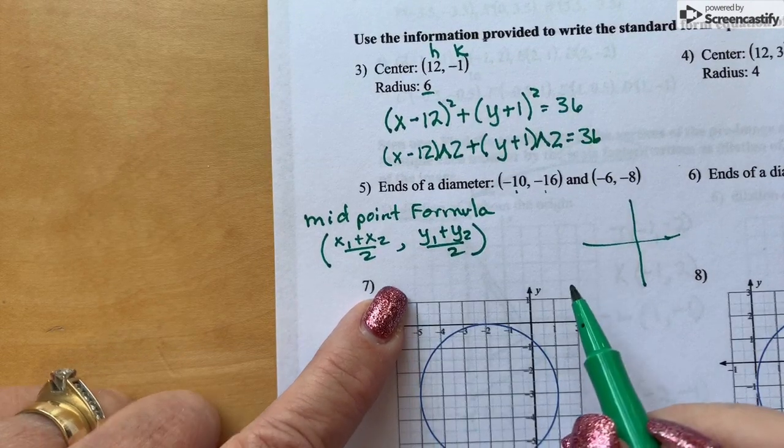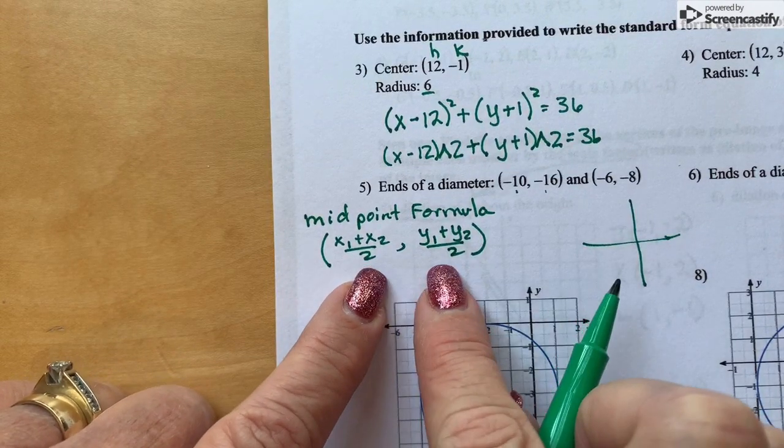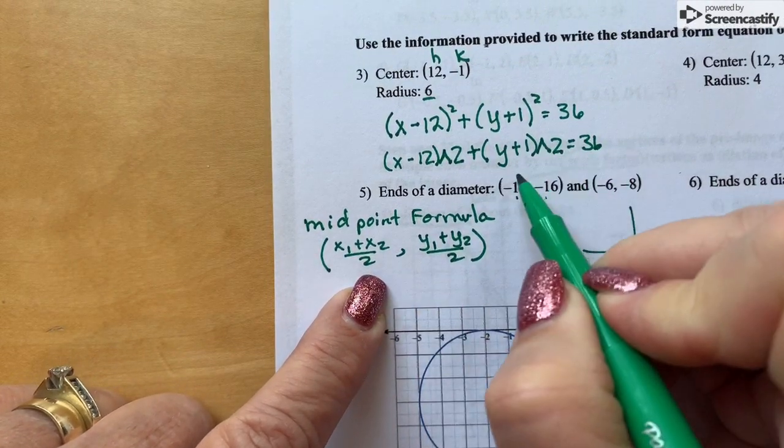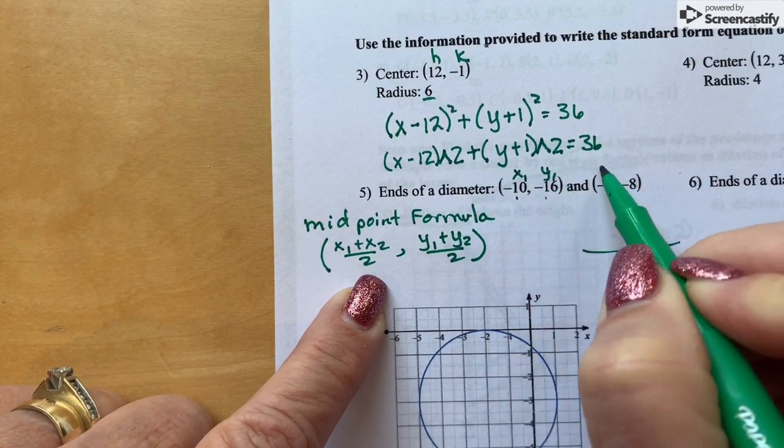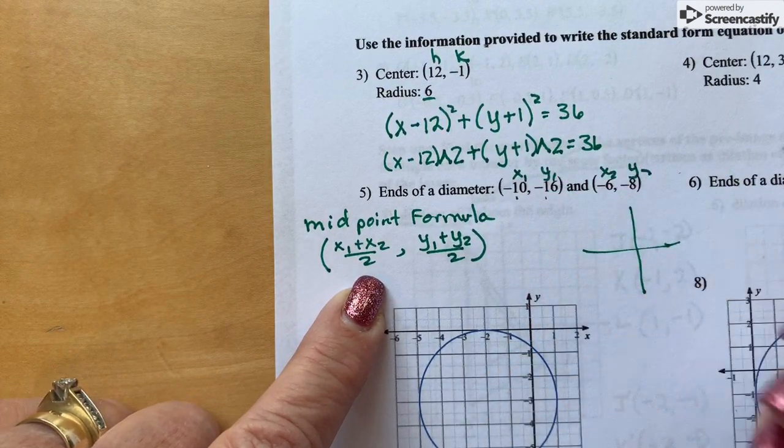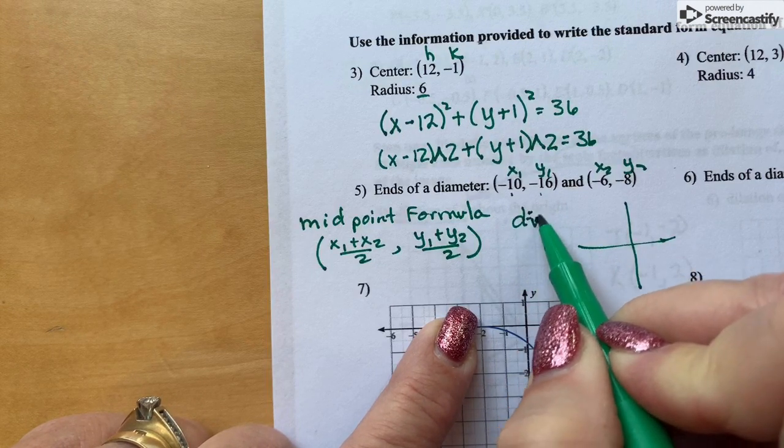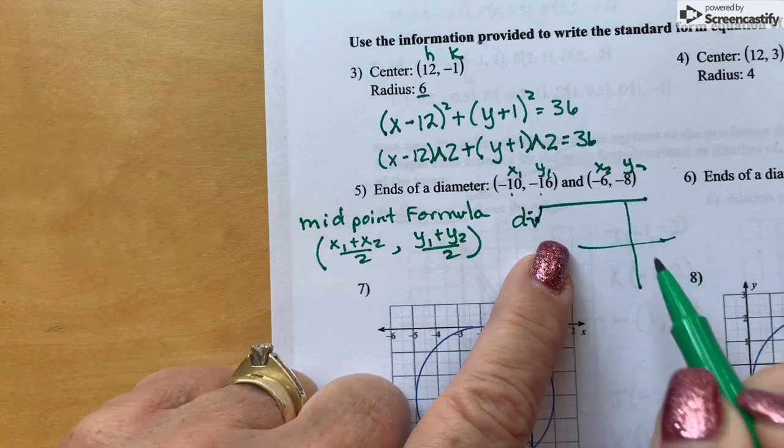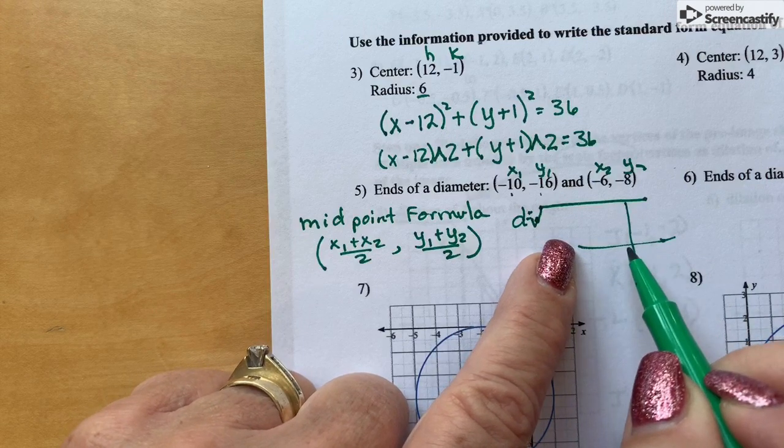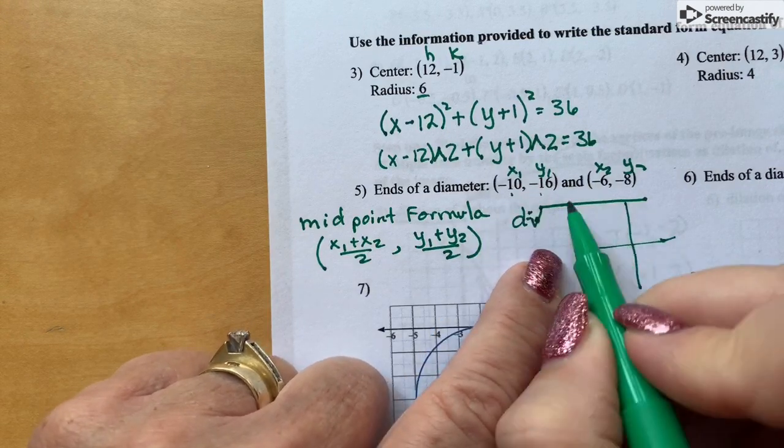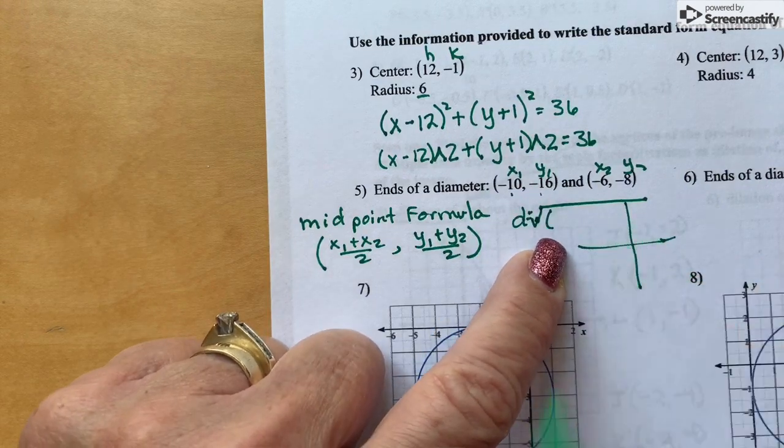And then the distance formula, after you found this, will give you your center. Using this as your x1, y1, and x2, y2. And then the distance formula. And if you were in class on the day I taught the distance formula, you know that if you graph it, you can just use the Pythagorean theorem really. But if you don't want to graph it, then the distance formula also works.